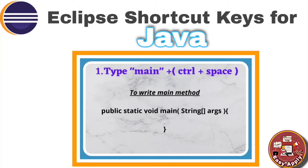Let's start from the first shortcut key. If you want to write a main method — public static void main — rather than writing this complete sentence, you can simply type 'main' plus Ctrl+Space. This whole main method will be written automatically in your Eclipse editor, so you can write your code faster.